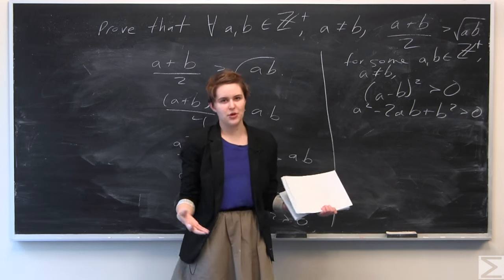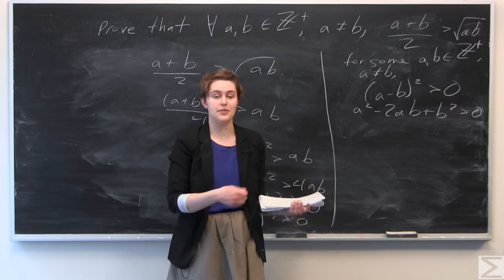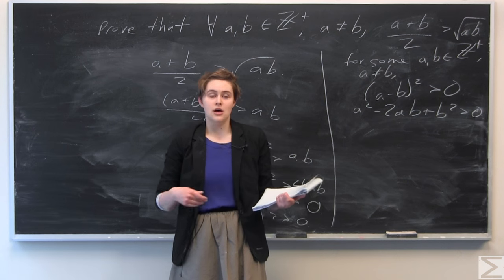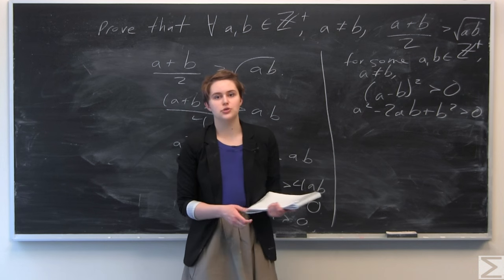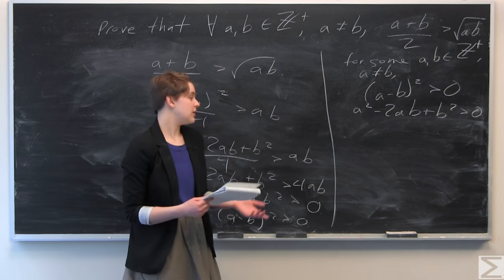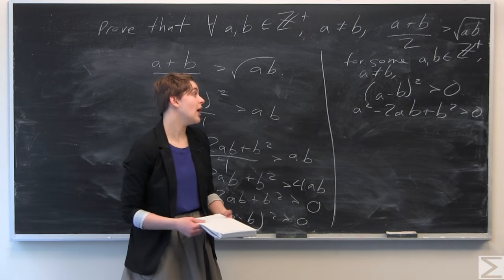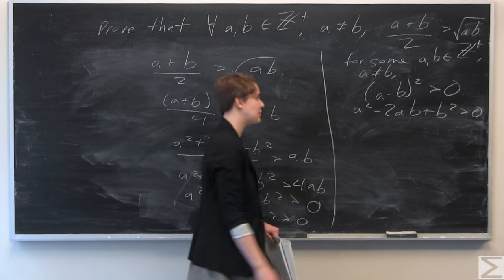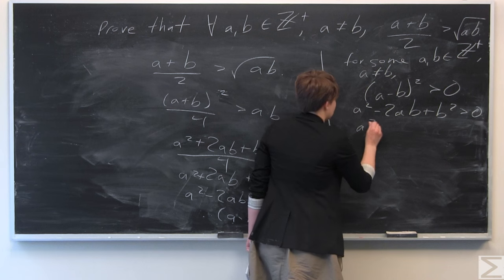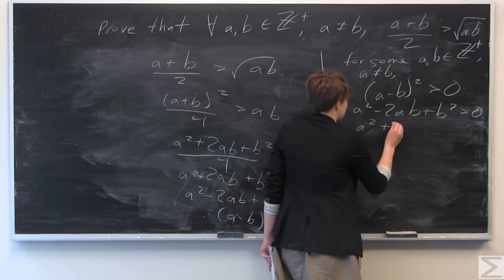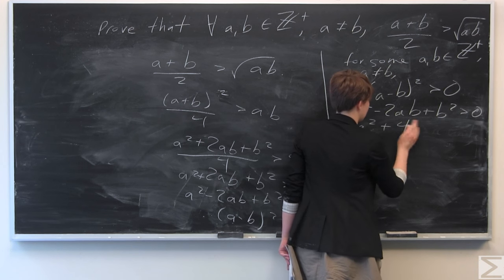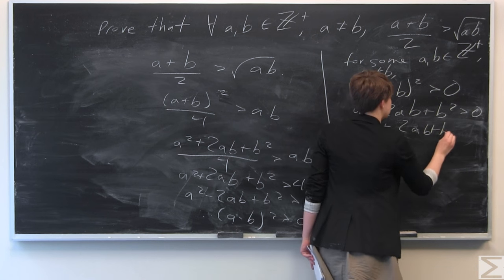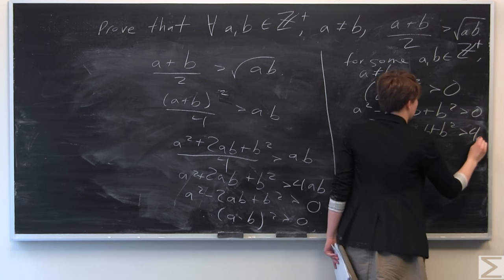This is something we could have done without backward reasoning, but the next step would be more difficult to intuit without it. Now we add 4ab to both sides, and we get a squared plus 2ab plus b squared is greater than 4ab.